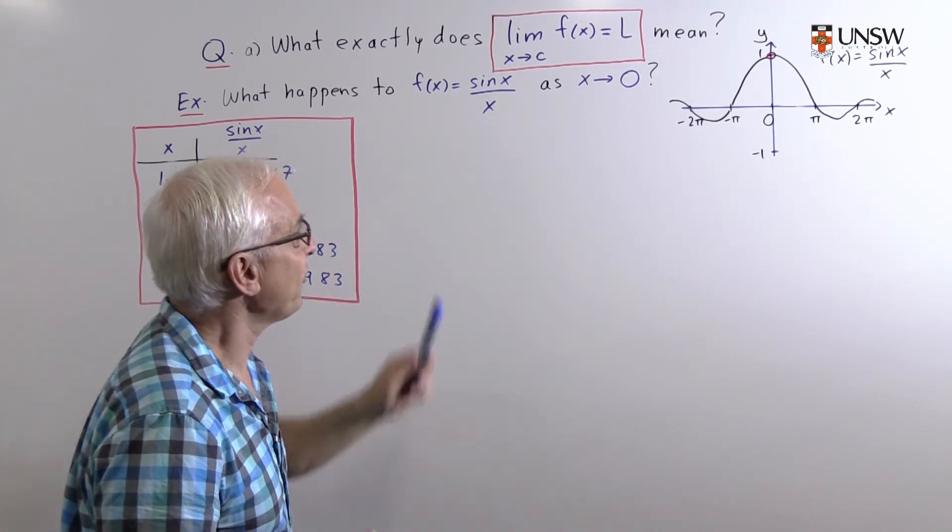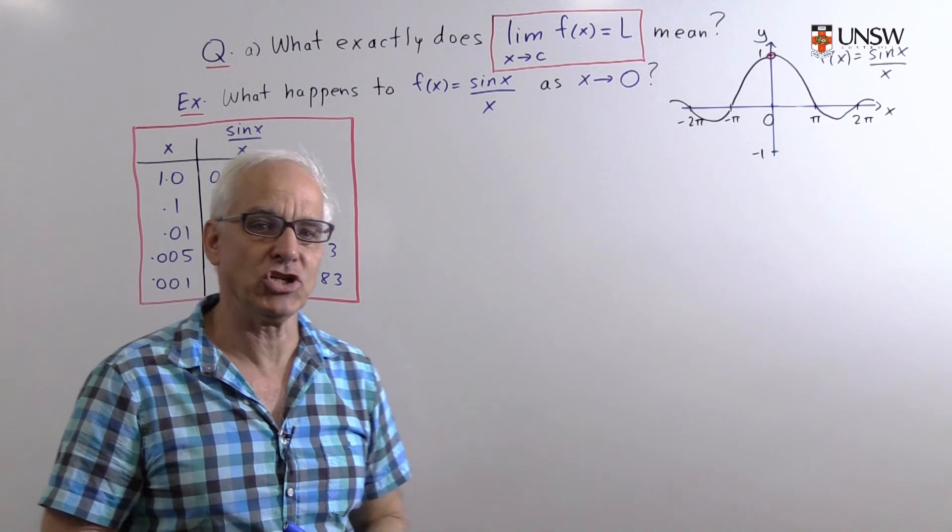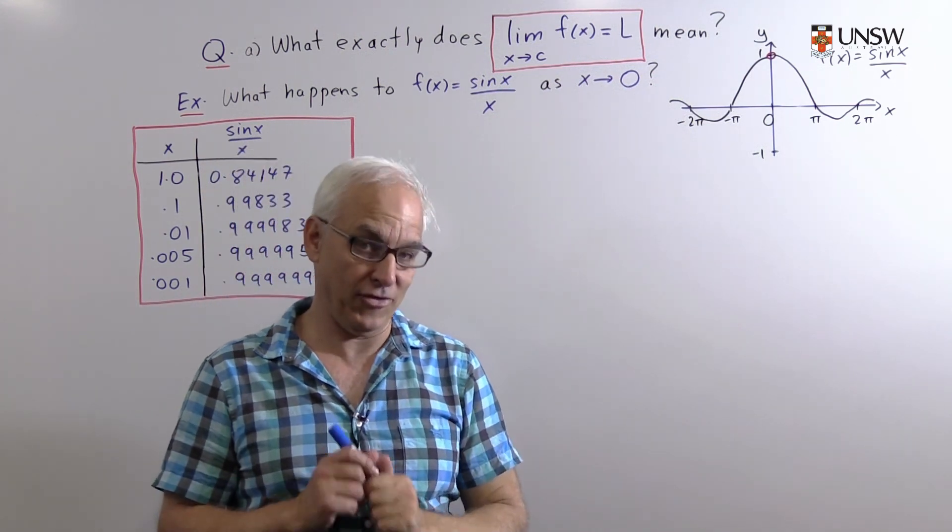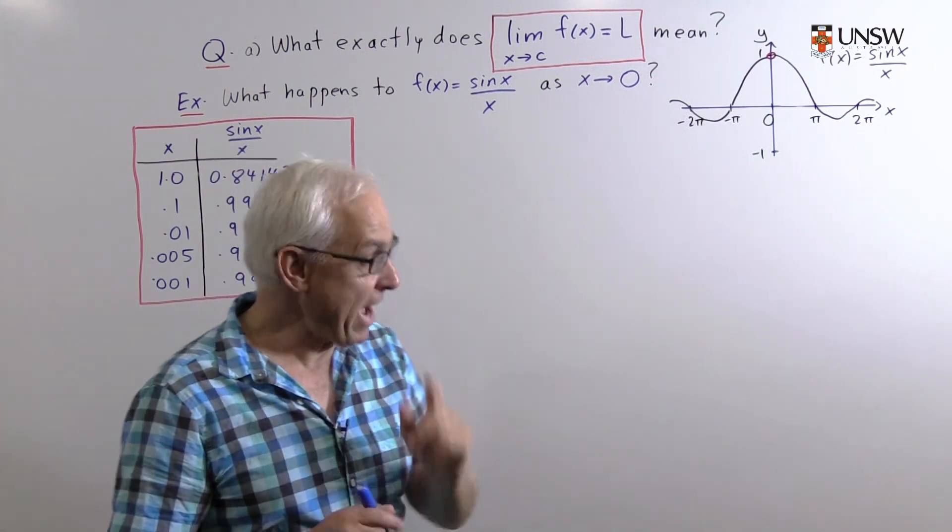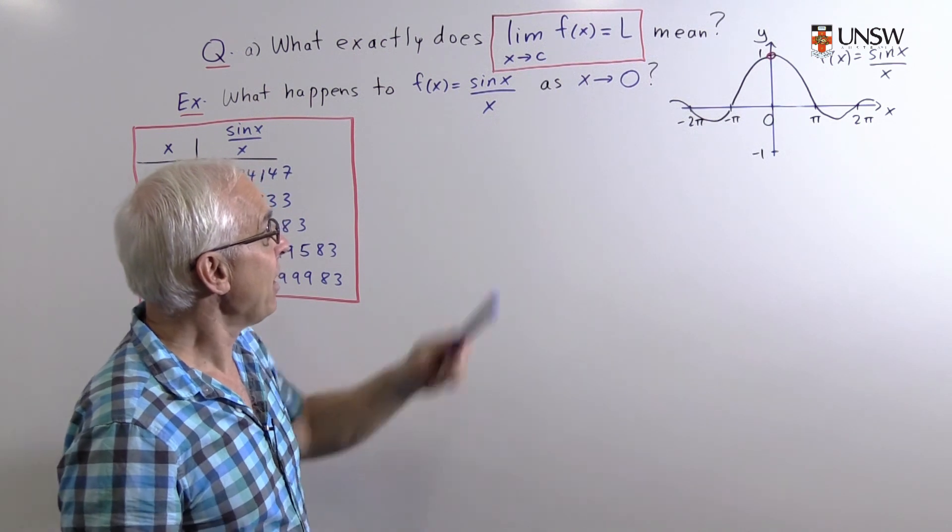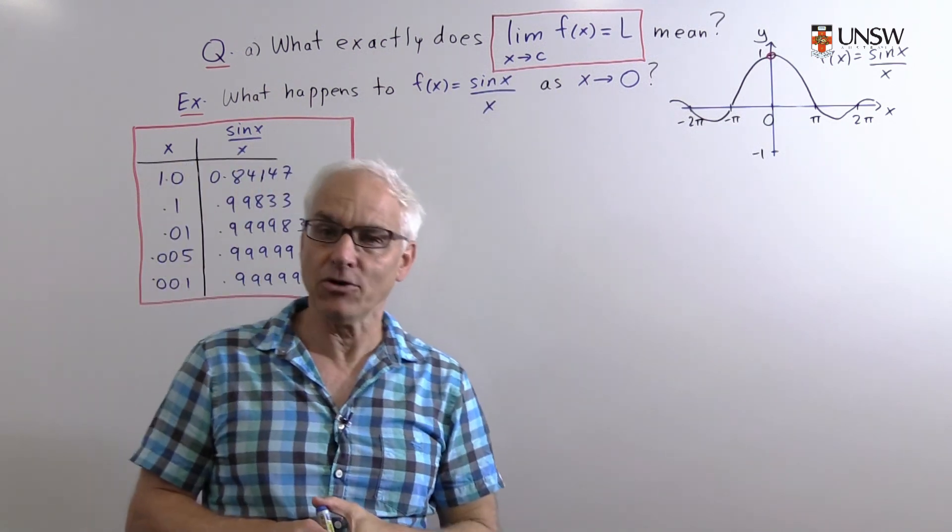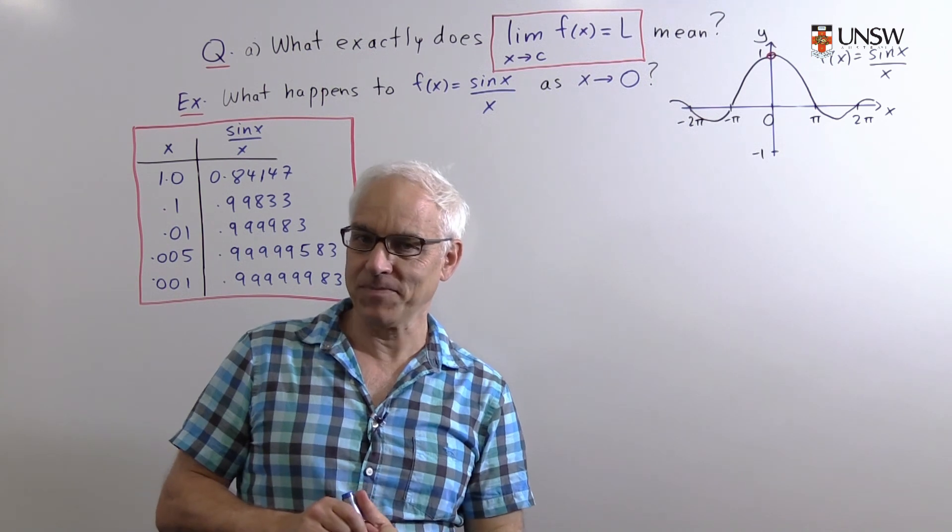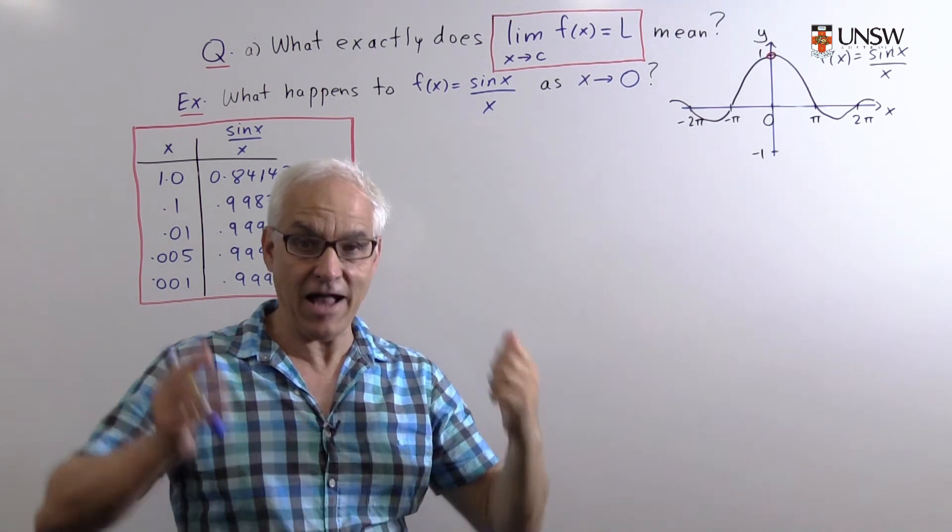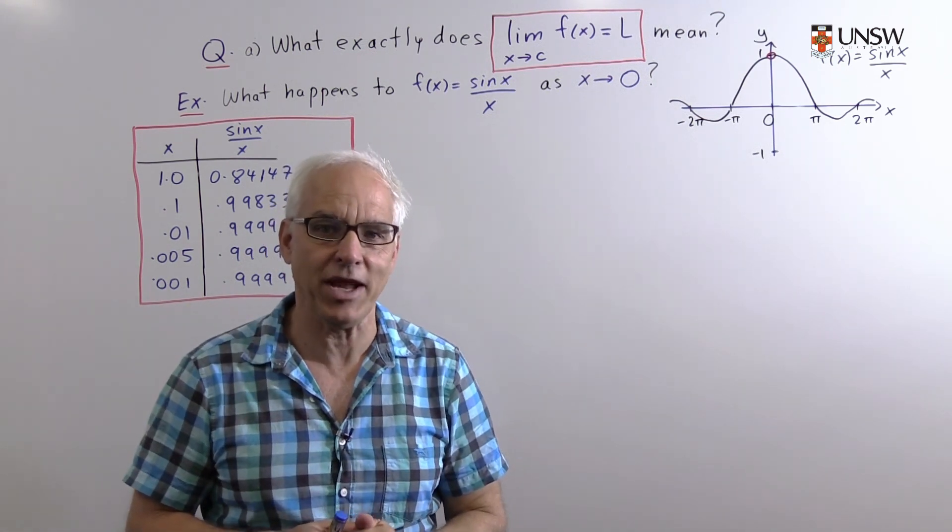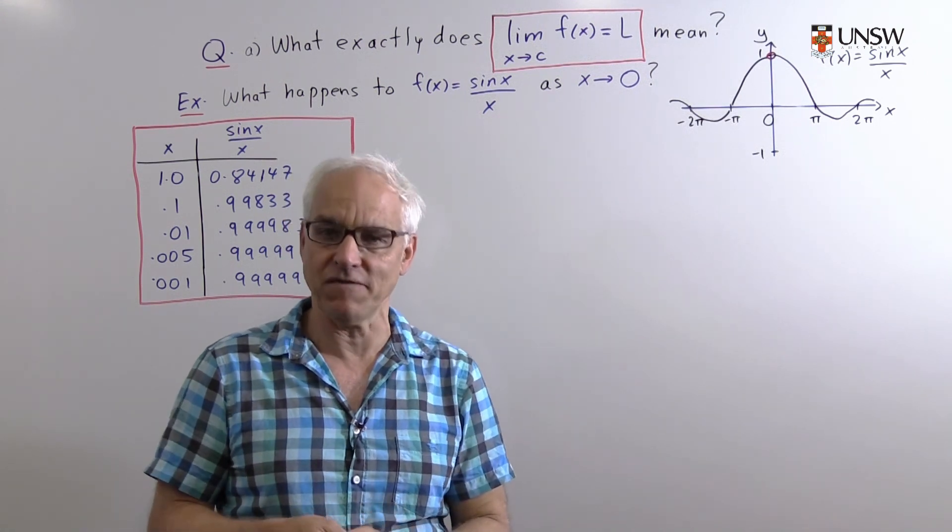What's interesting for us is the behavior of this function at the point x equals zero. Something problematic happens there because both the numerator and denominator are zero if we plug in x equals zero. So if we ask what is the value of this function at x equals zero, we get zero over zero, which is undefined.